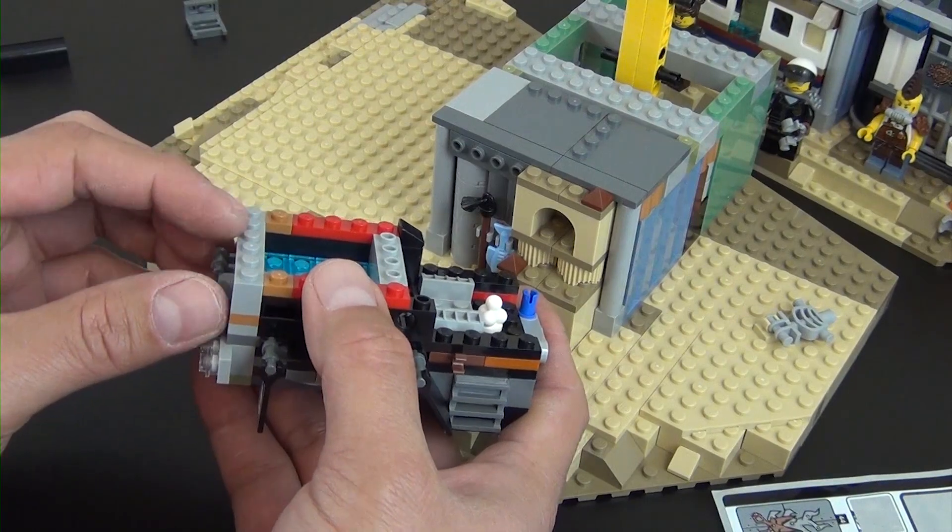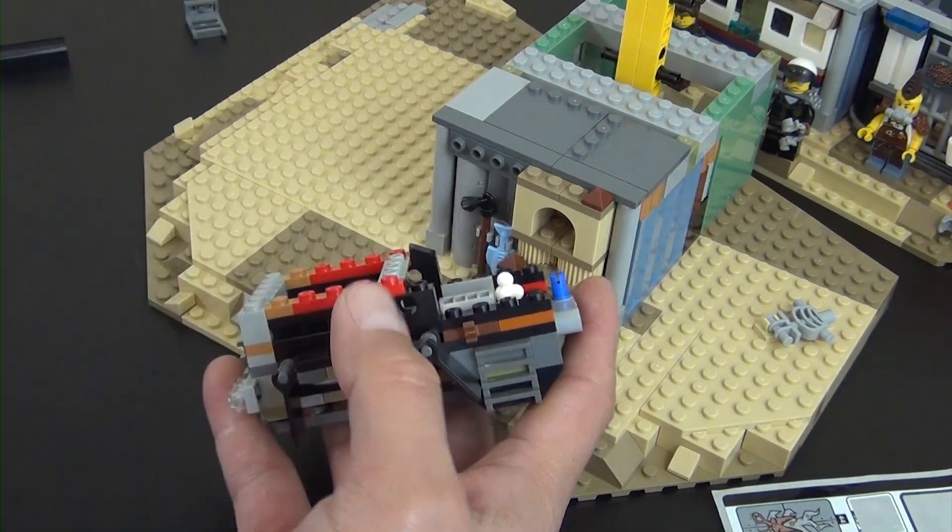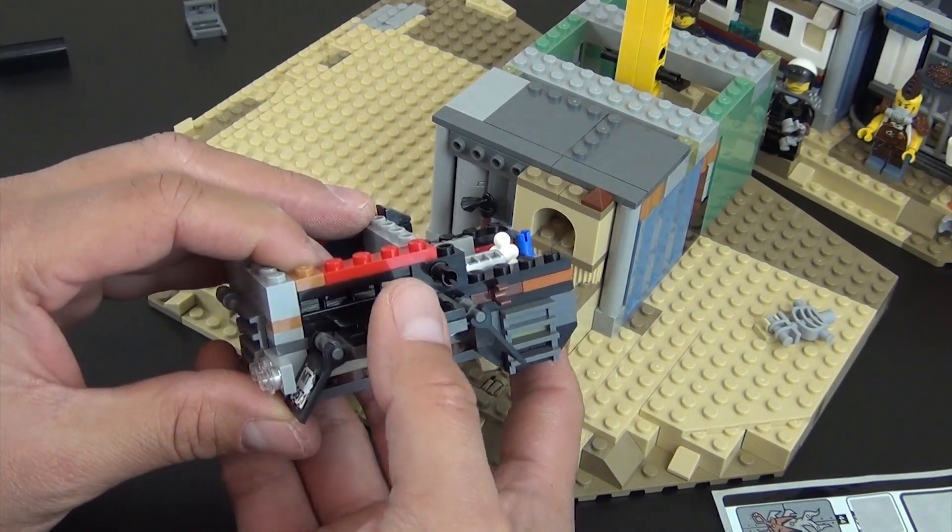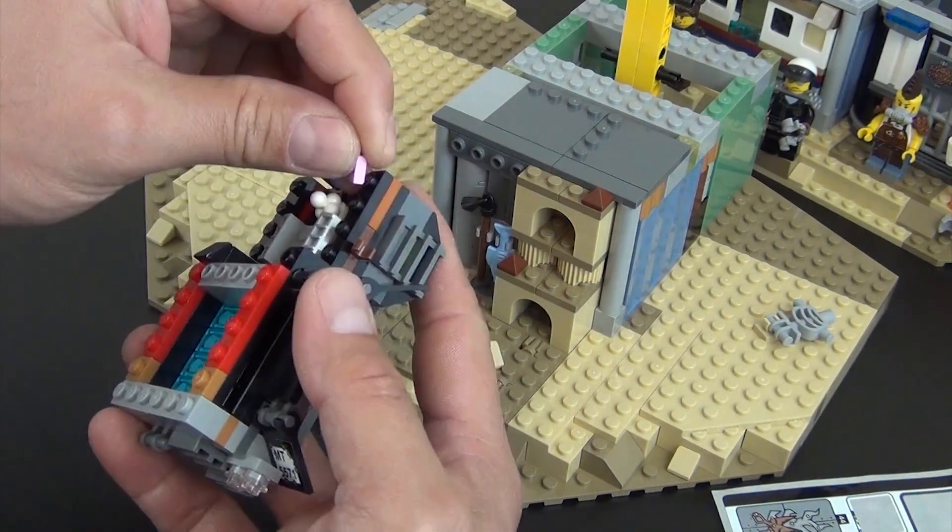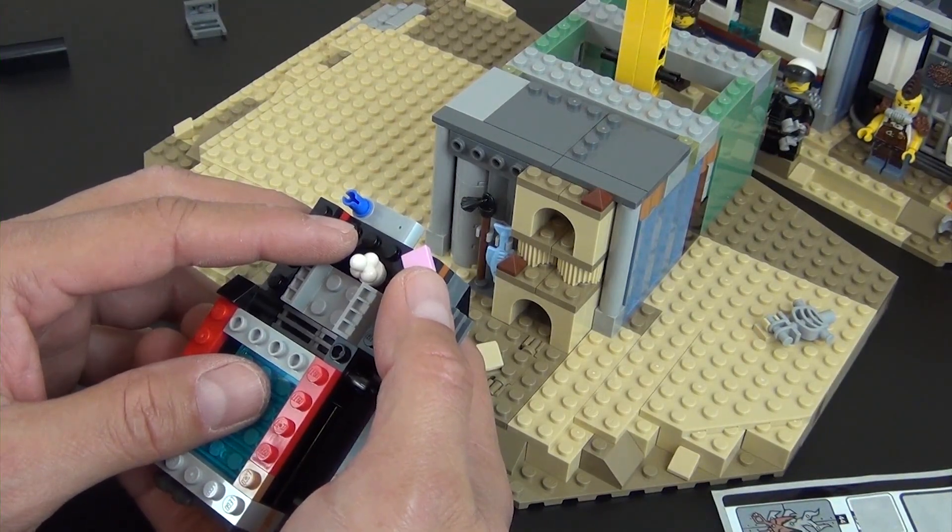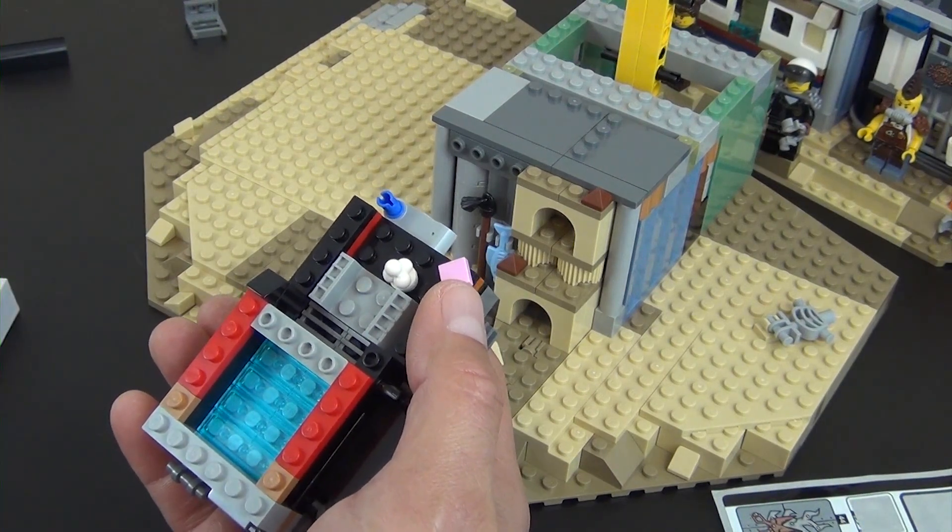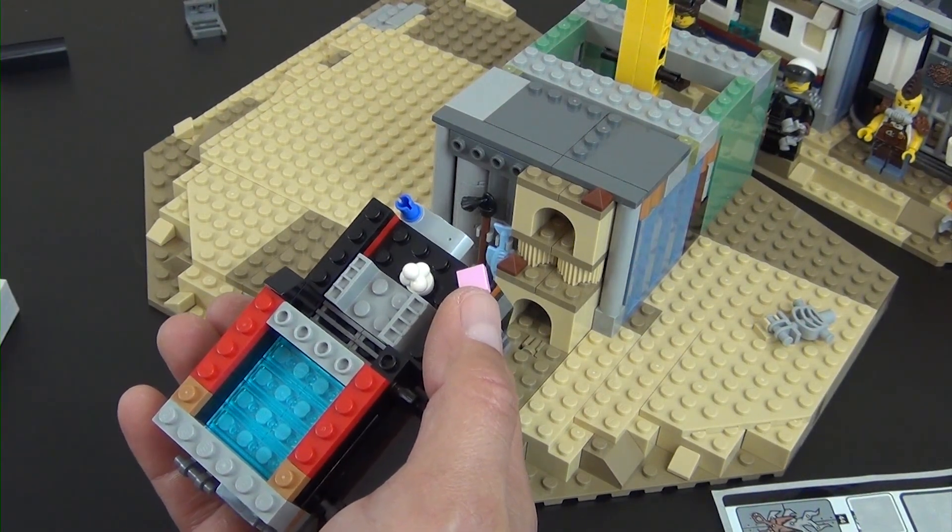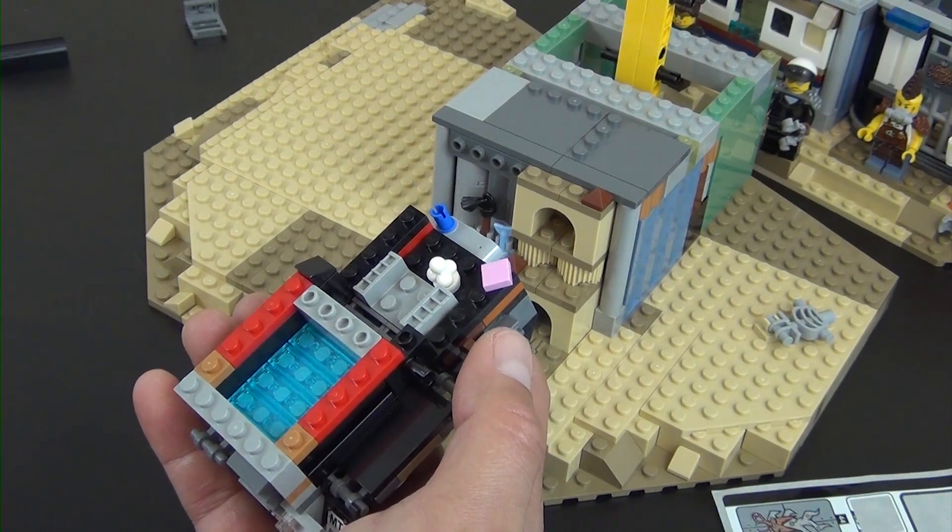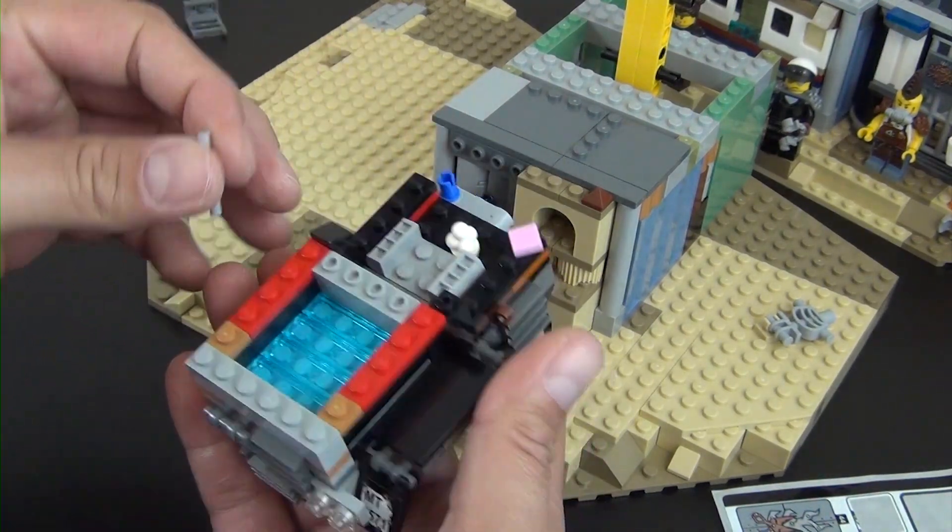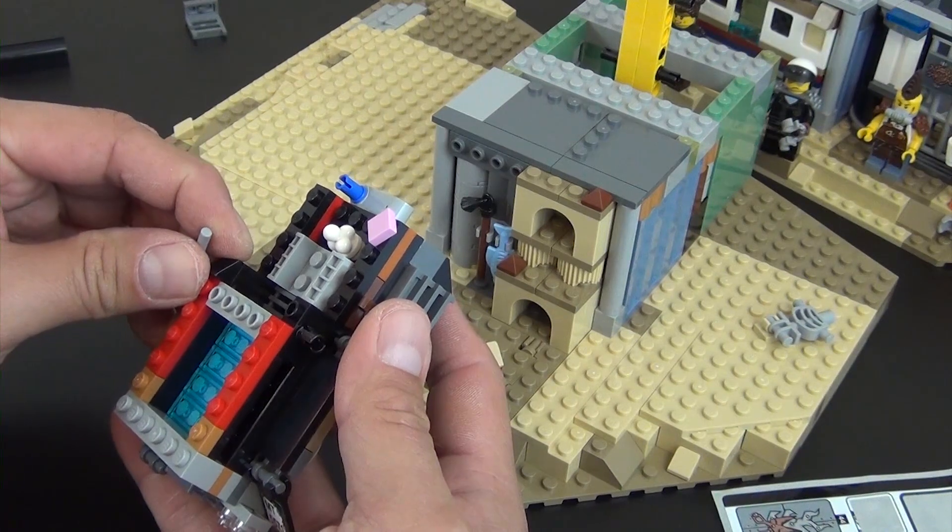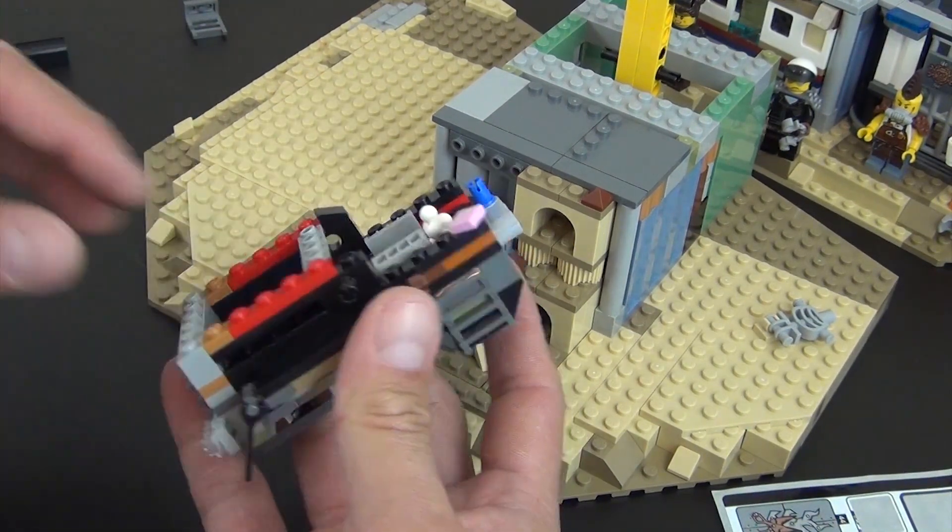There's an error in the instructions. They show a Technic pin going in here, but they don't show it in the parts call out. So just kind of keep that in mind. Does show this little pink tile there and a bar, shows a bar. Maybe that's where it messed up. I don't see the bar anywhere.